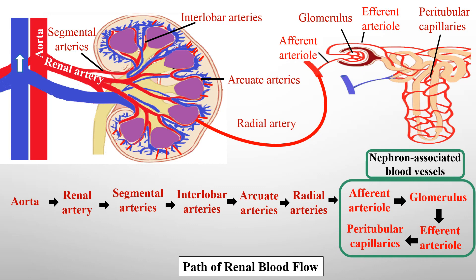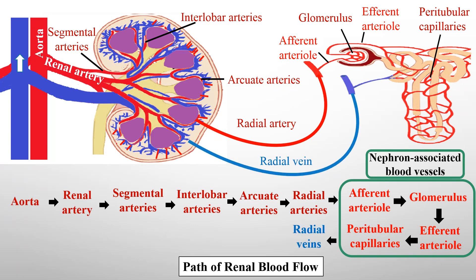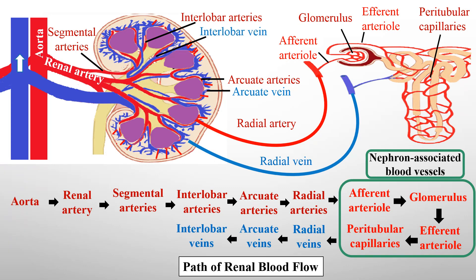The afferent arteriole, glomerulus, efferent arteriole, and the peritubular capillaries are all nephron-associated blood vessels. From the peritubular capillaries arise the radial veins. The radial veins join to form the arcuate veins, which again join to form the interlobar veins that run down and join together to form the renal veins. The renal veins from both kidneys finally enter the vena cava, which carries blood away from the kidney.